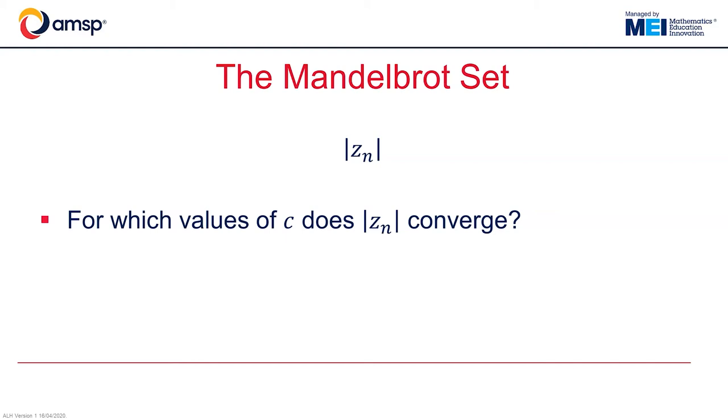He decided to plot, on an Argand diagram, all the numbers whose modulus remained below 2, however many iterations he did.